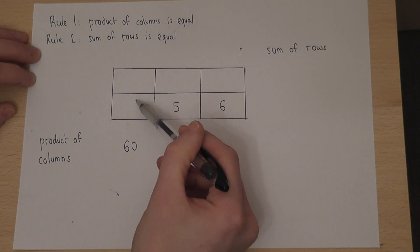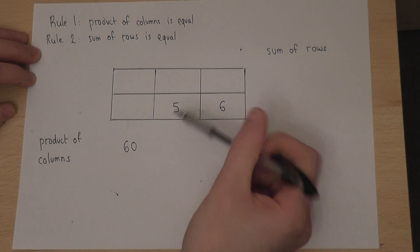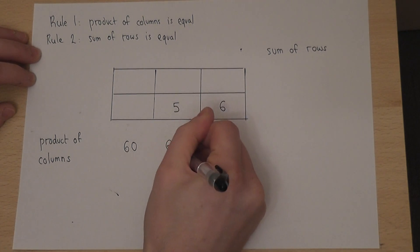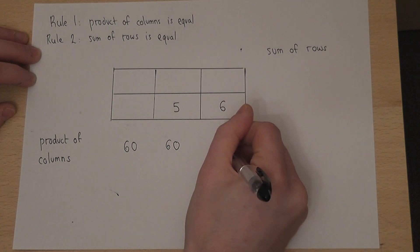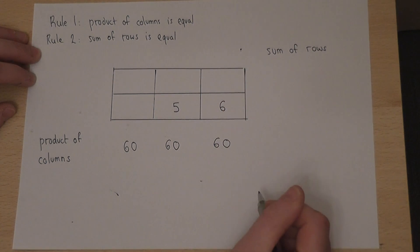So that times that equals 60. Therefore that times that also equals 60, and that times that is also 60. Product just means multiply.